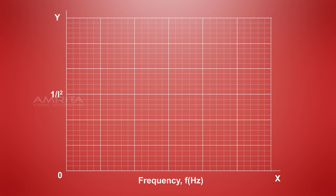A graph is plotted with frequency along the x-axis and reciprocal length along the y-axis. It is found to be a straight line.